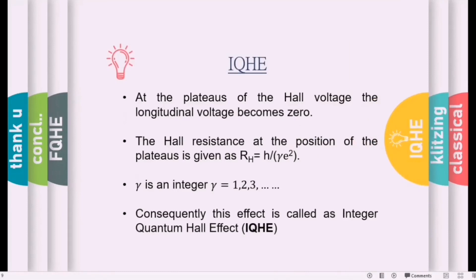Another point is that at the plateaus of the Hall voltage, the longitudinal voltage becomes zero. So after the discovery of quantum Hall effect, we were able to calculate the Hall resistance. The Hall resistance RH at the position of the plateaus is given as RH equals h divided by γe², where h is the Planck constant and γ is an integer, that is γ equals 1, 2, 3, and so on.